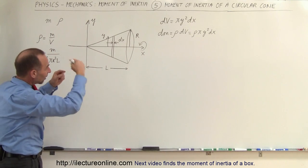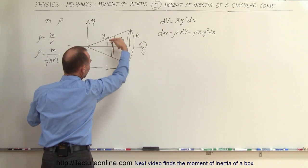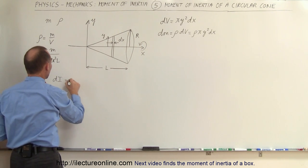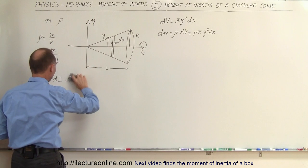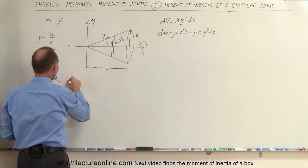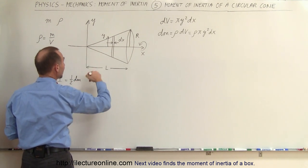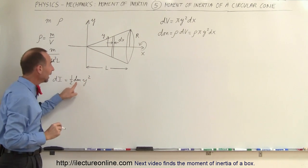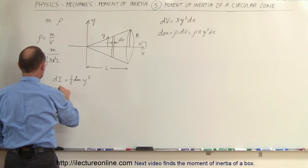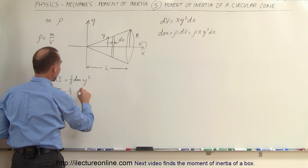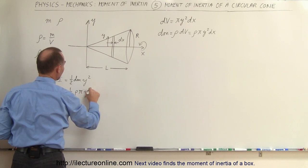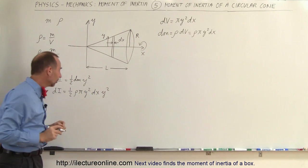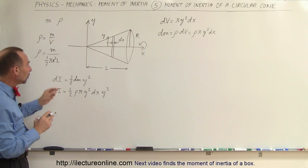As this little disc rotates on its axis, the moment of inertia dI — a small portion of the total — would be one-half the mass of the disc, because it's a solid disc. So dI equals one-half dm times the radius squared, which is times y squared. Substituting dm, dI equals one-half times density times pi y squared times dx times y squared. That is the moment of inertia of this little disc.